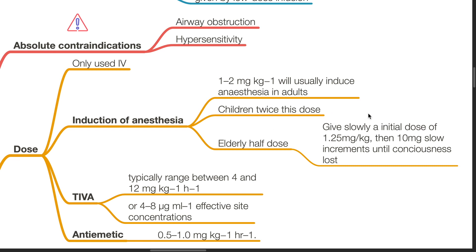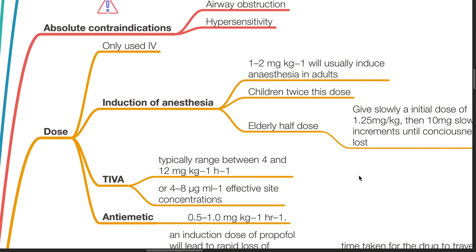In the elderly, it should be given slowly — an initial dose of 1.25 mg per kg, then 10 mg slow increments until consciousness is lost, to avoid hypotensive effects. For total intravenous anesthesia, the typical dose ranges between 4 and 12 mg per kg per hour, or 4 to 8 micrograms per mL effective site concentration. The antiemetic dose is 0.5 to 1 mg per kg per hour.